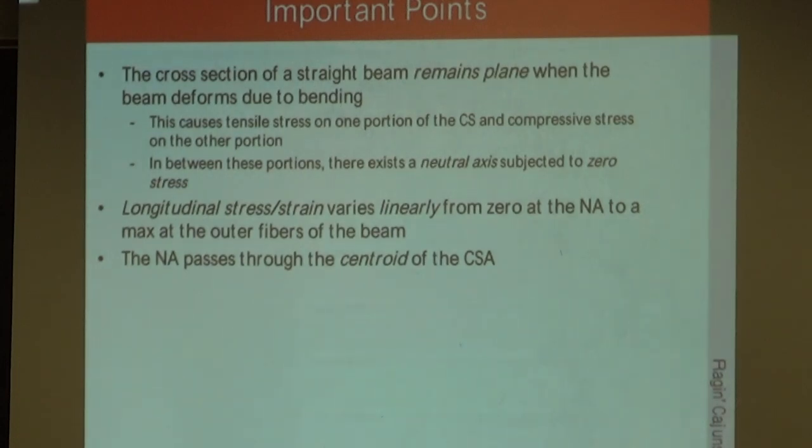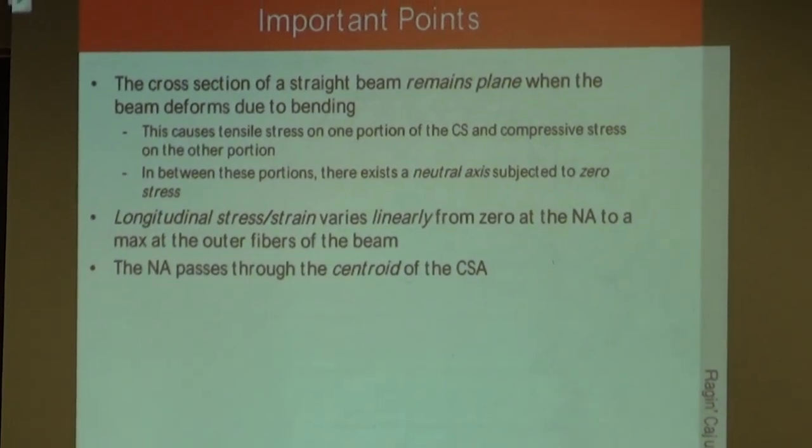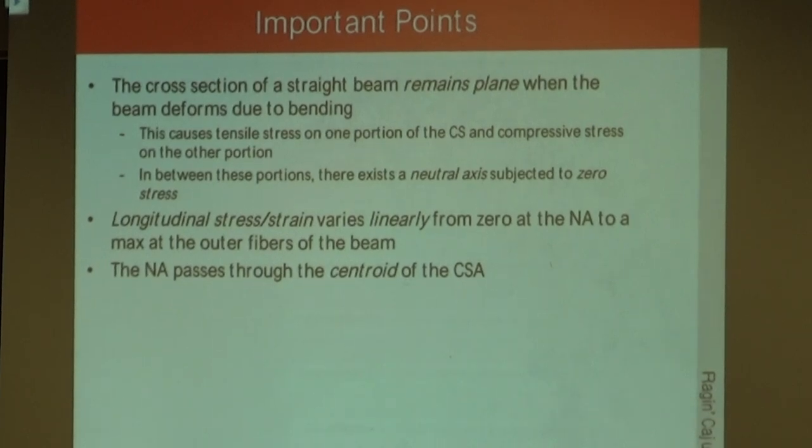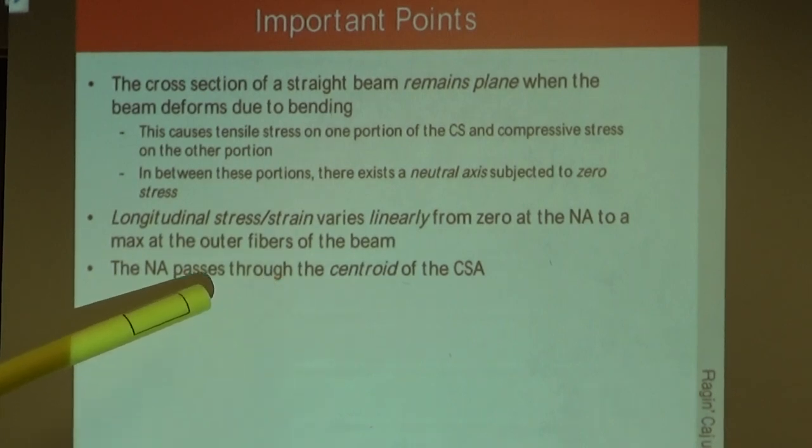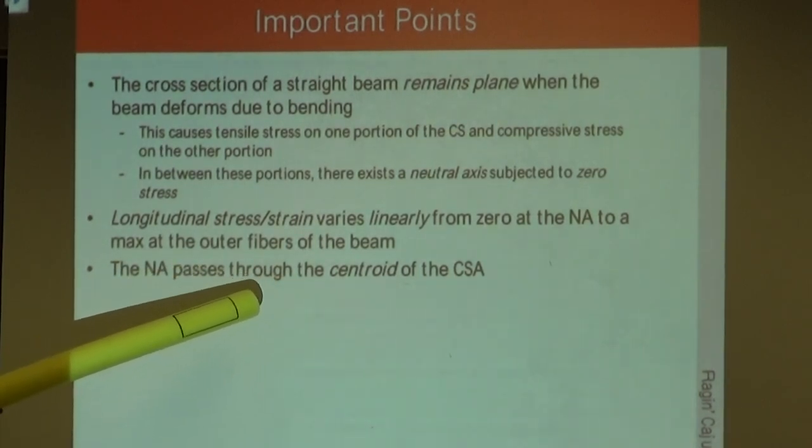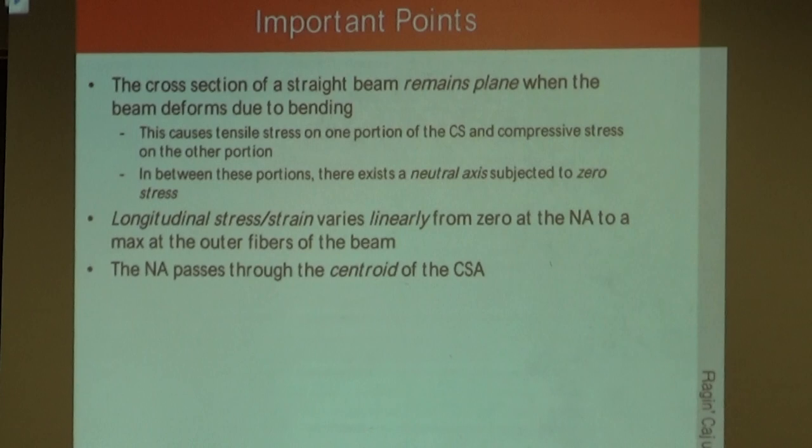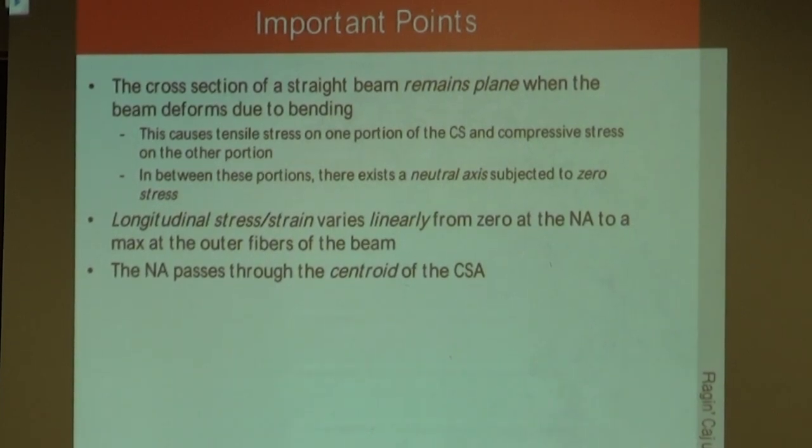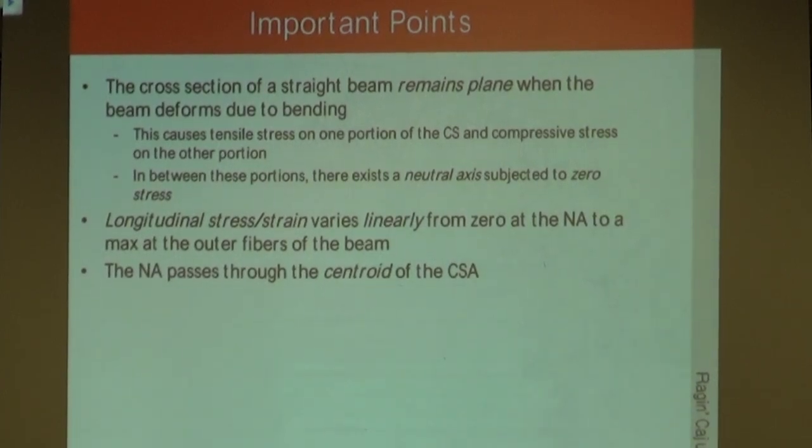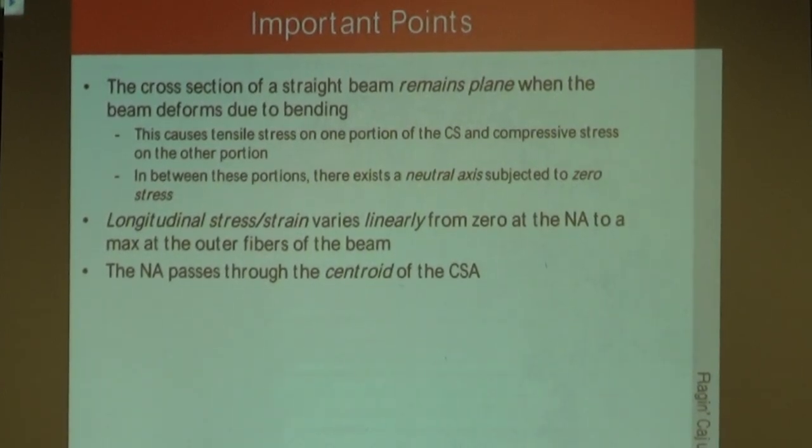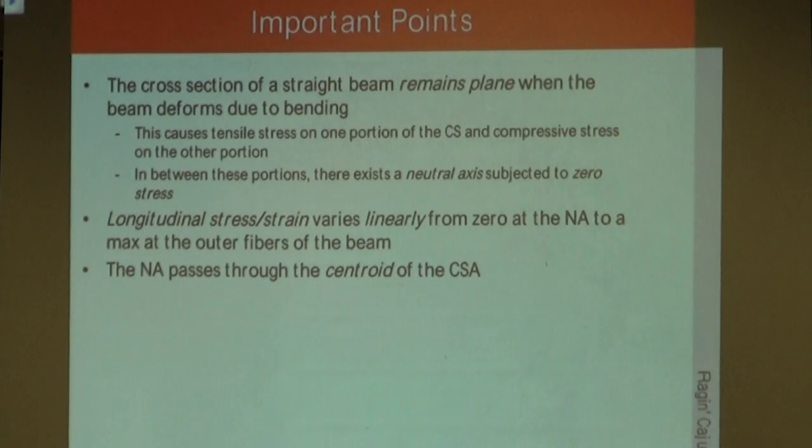So our stress max is moment times our radial distance over I. And if we're looking at some stress at an intermediate distance Y, we can say stress equals MY over I. Important points to note: the cross-section of the beam remains plane. And one thing we need to identify is the neutral axis. For these types of bending problems in Chapter 6, the neutral axis lies at the centroid of the cross-sectional area.